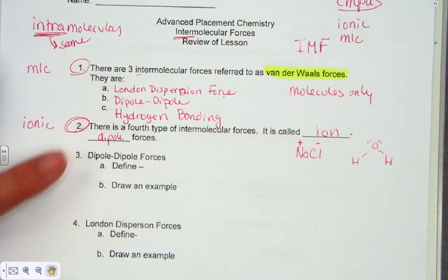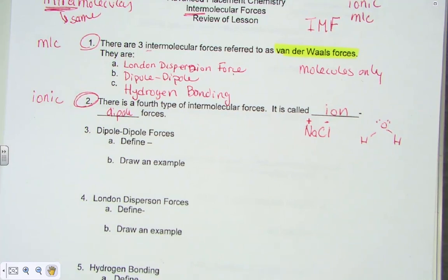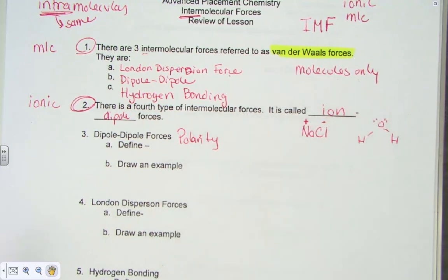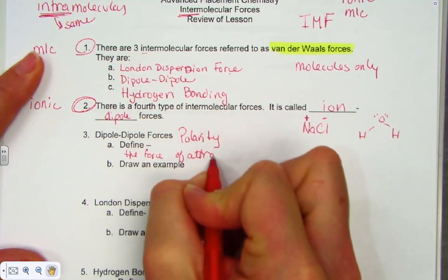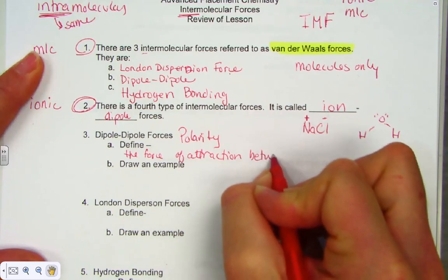Let's dig in, starting with dipole-dipole forces. A student shared a definition: a definite polarity due to molecular structure — essentially a polar molecule attracted to a polar molecule. So the force of attraction between polar molecules — that's the dipole-dipole IMF.